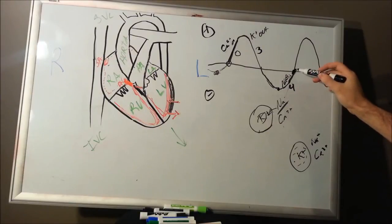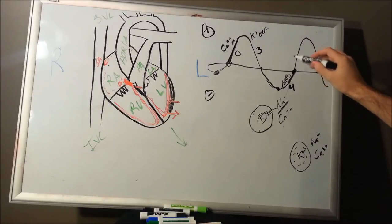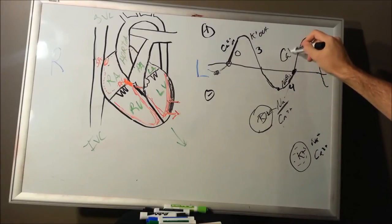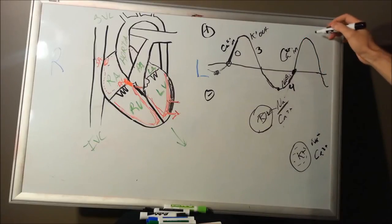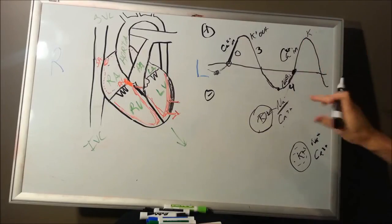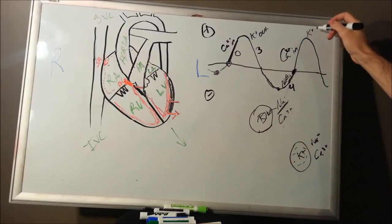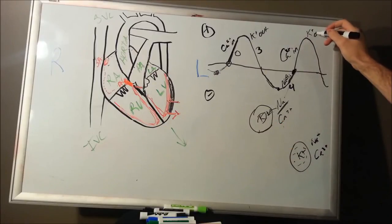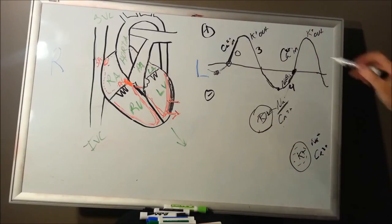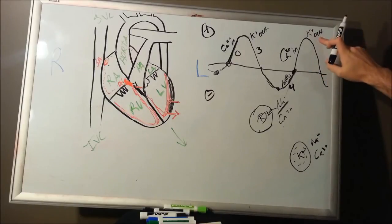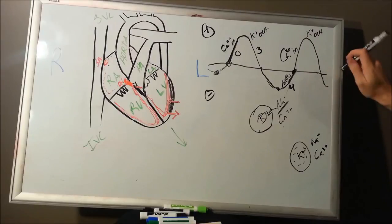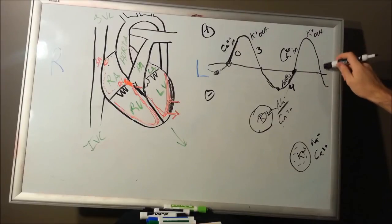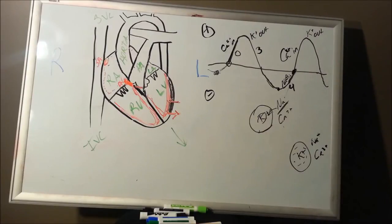Once it hits threshold again, you're going to have the rush of calcium in. Your cell realizes it doesn't like all that positive charge inside, potassium out will start, potassium in will stop. With all this potassium going out, your cell is going to get more and more negative inside, and the cycle will repeat.